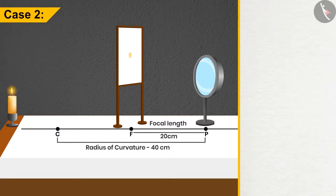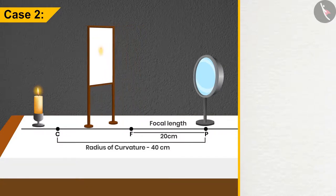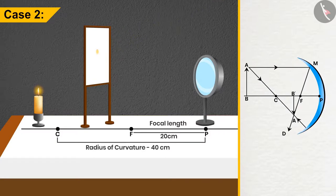Case 2: If the candle is placed beyond C, then I will get reflection on the screen when the screen is placed between F and C. Here as well, the size of the image is smaller than the object and real and inverted in nature.